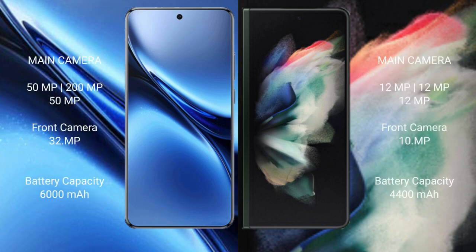The Vivo X200 Pro features a triple rear camera setup of 50MP plus 200MP plus 50MP, and a 32MP front camera. The Samsung Galaxy Z Fold 3 features a triple rear camera setup of 12MP plus 12MP plus 12MP, and a 12MP front camera. The Vivo X200 Pro has a 6000mAh battery.